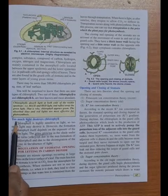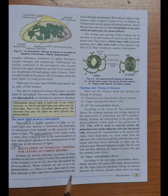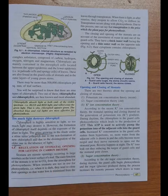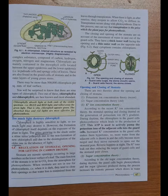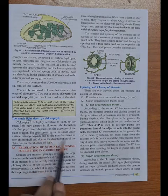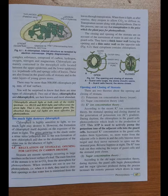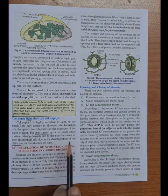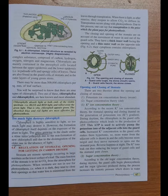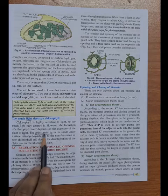Too much light destroys chlorophyll. Chlorophyll is highly sensitive to light, so too much light may destroy it. However, the formation of chlorophyll itself depends on the exposure of the plant to light — light is required for chlorophyll formation. But when a plant is exposed to bright light, it may destroy the chlorophyll pigment. This is why grass growing in shade under a stone turns yellowish — due to non-formation of new chlorophyll and disintegration of the older one in the absence of light. This is very important for reasoning questions.